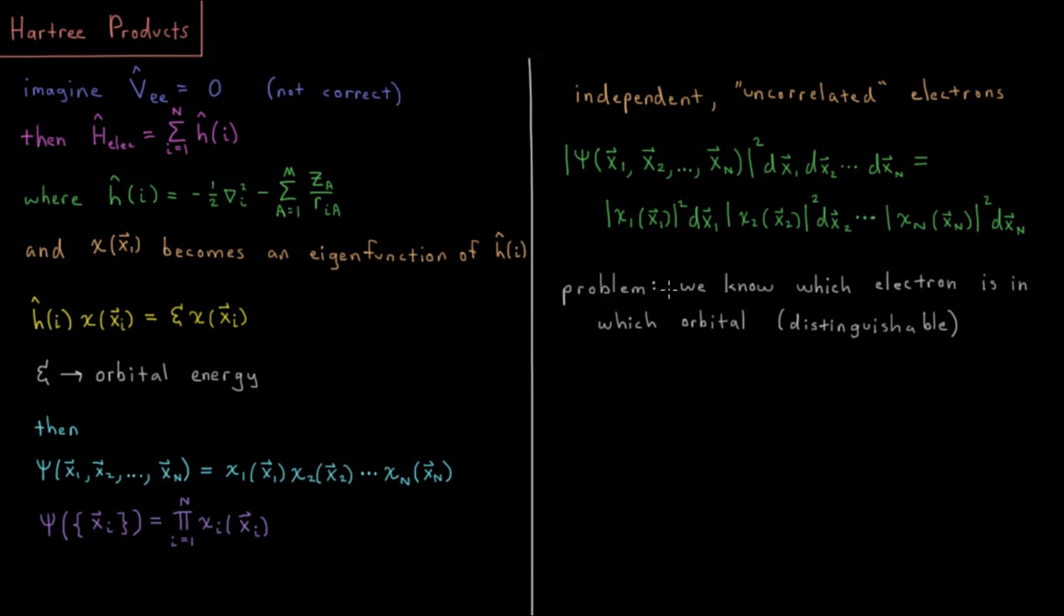But the problem is, in this situation, we know which electron is in which orbital. We know electron 1 is in orbital 1, we know electron 2 is in orbital 2, and so on. And this makes our electrons what we would call distinguishable. Since we know which one is in which state, we know which electron is which.